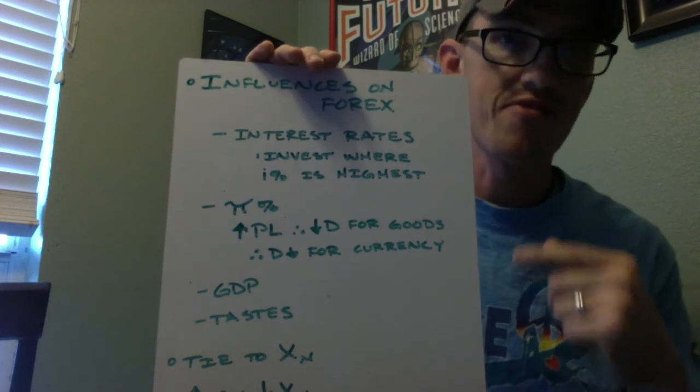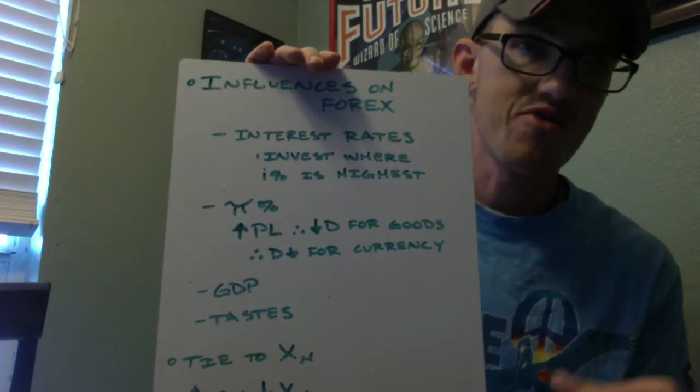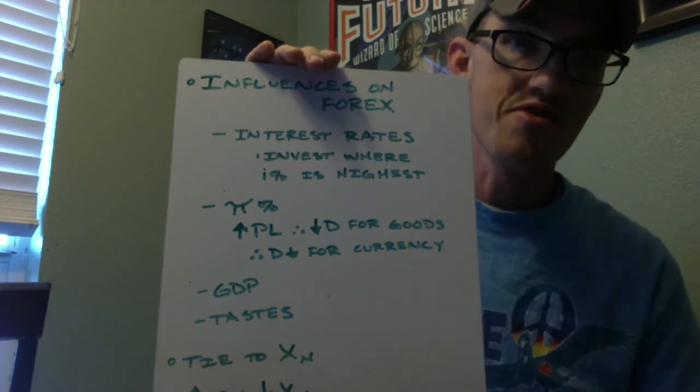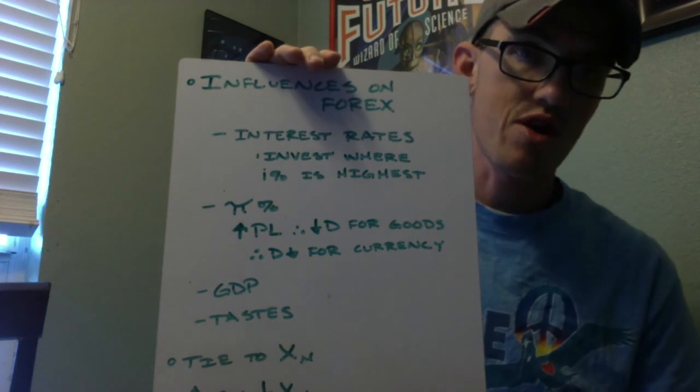So we invest where it's highest. Price level. I'll buy where things are cheaper. So increasing price levels lead to a decrease in demand for their goods, which leads to a decrease in demand for that currency.